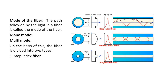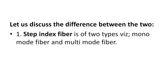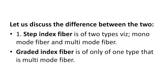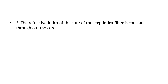The fiber is divided into two types: step index fiber and graded index fiber. Now let us discuss the difference between the two. Step index fiber is of two types — monomode fiber and multimode fiber — but graded index fiber is only of one type, that is multimode fiber. The refractive index of the core of the step index fiber is constant throughout the core.